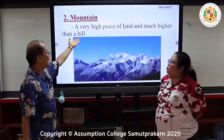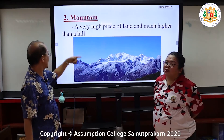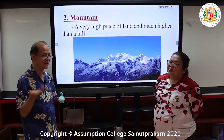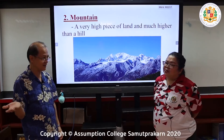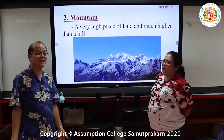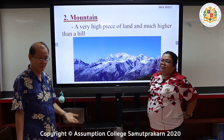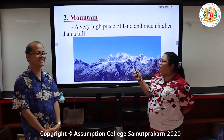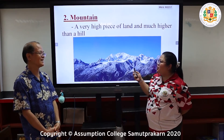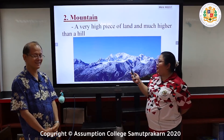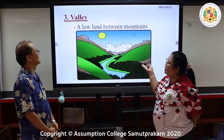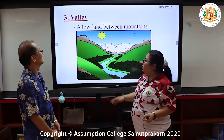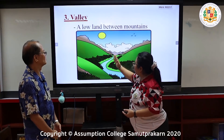A mountain is a kind of landform that is a very high piece of land, much higher than a hill. One of the highest mountains in the world is Mount Everest — the highest peak in the world, located in Nepal. Next, a valley is the low land between mountains.